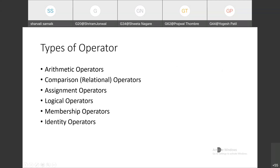There are different types of operators in Python programming. The first is arithmetic operators. Then we have comparison operators, which are also called relational operators. Then we have assignment operator, logical operator, membership operator, and identity operator. We are going to see all these operators one by one.